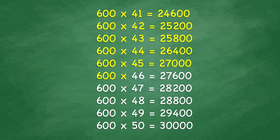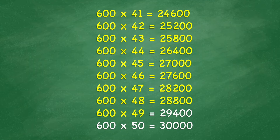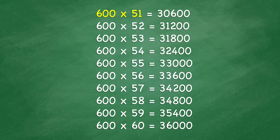600 x 46 equals 27,600. 600 x 47 equals 28,200. 600 x 48 equals 28,800. 600 x 49 equals 29,400. 600 x 50 equals 30,000. 600 x 51 equals 30,600.